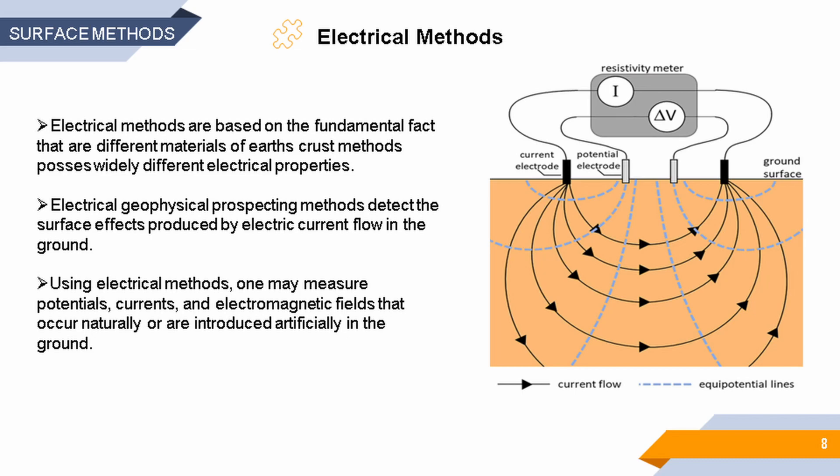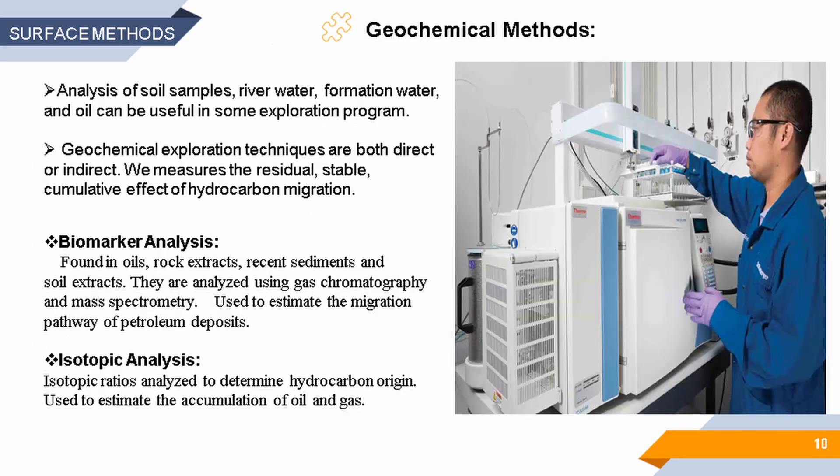Advancing to the electrical method: electrical geophysical prospecting methods detect the surface effects produced by electric current flow in the ground, using electromagnetic fields that occur naturally or are introduced artificially in the ground.